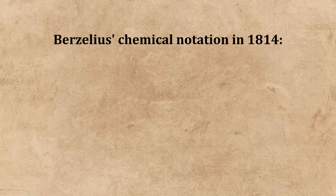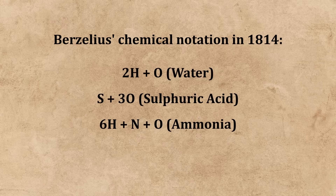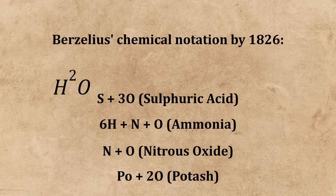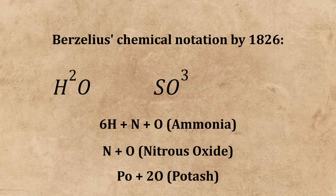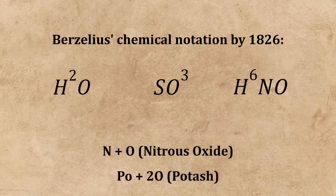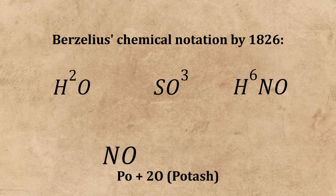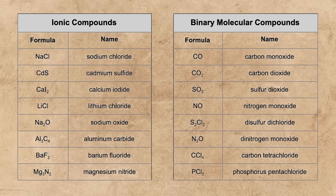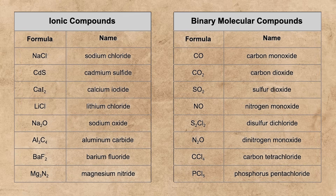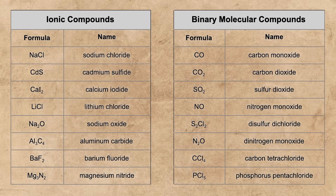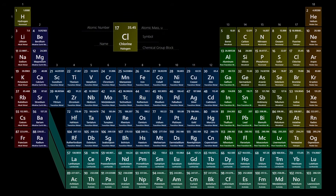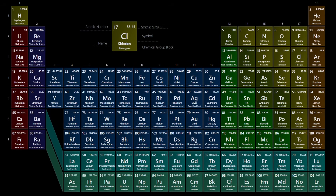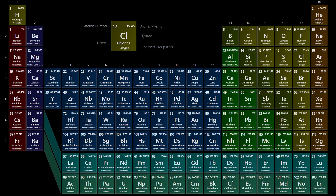His chemical notation by 1826 had also changed somewhat in the numerical sense. No longer were the compounds with multiple of the same element expressed through a number in front of the target element, but were rather expressed as superscripts after the target element. These superscripts have since been changed to subscripts, and obviously some of the elements have had name changes, but the underlying notation and symbols we use today traces back to Berzelius, and he is considered the father of modern chemical notation.